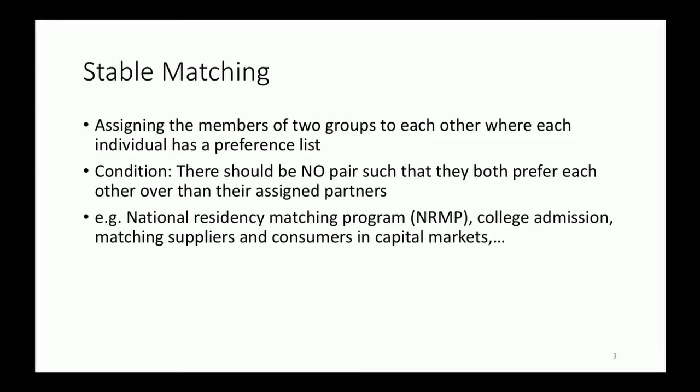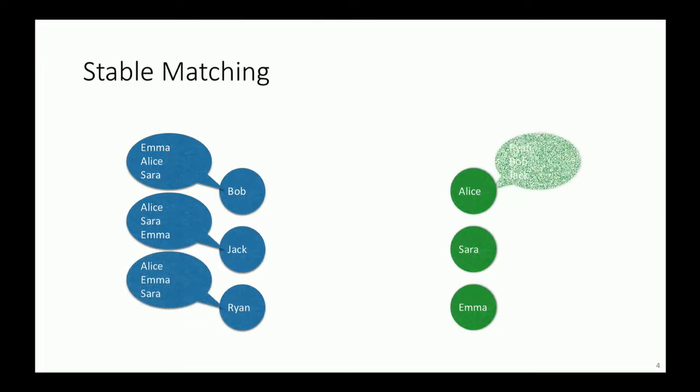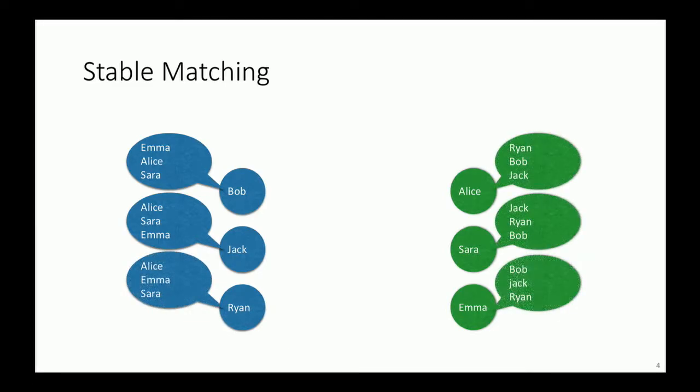Stable matching is also used in capital markets to assign consumers and suppliers. It's more fun to describe stable matching in the context of marriage. So on the left hand side you have a group of boys and on the right hand side you have a group of girls. Of course each person has a preference list. If we assign the members of these two groups to each other in this order, it is not a stable match.